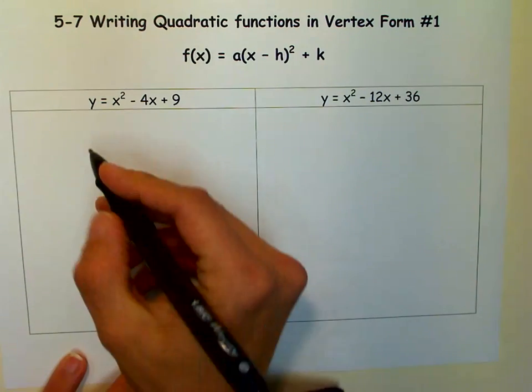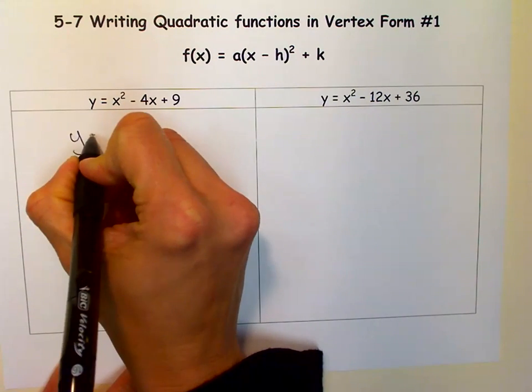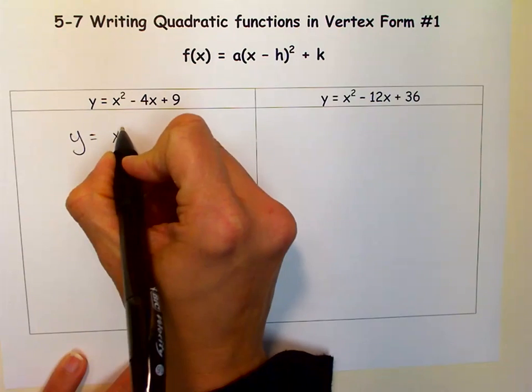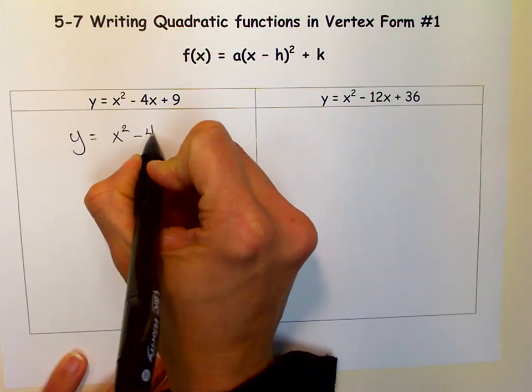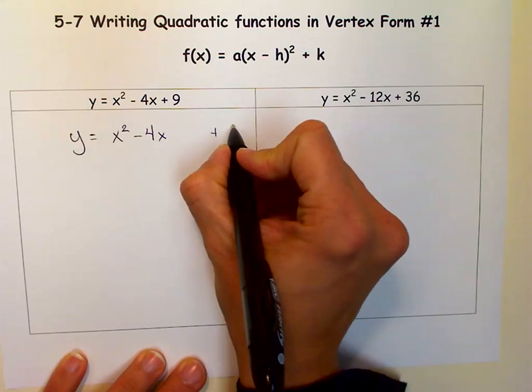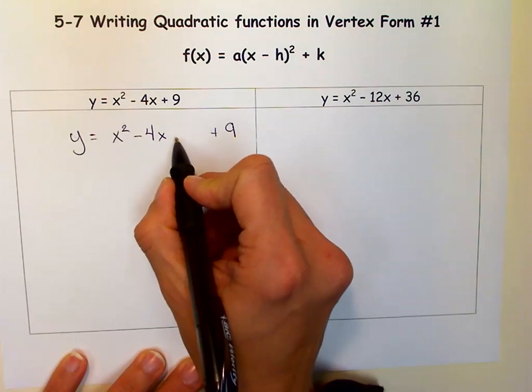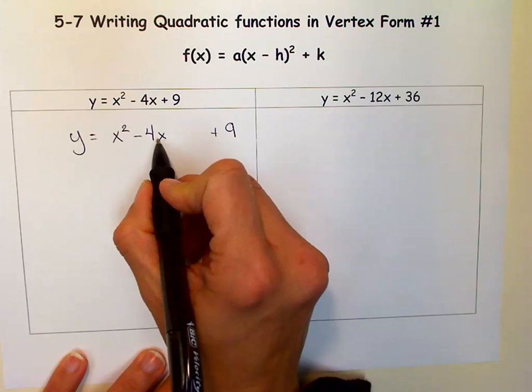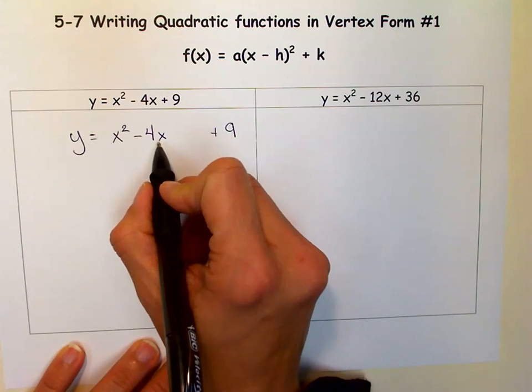So we do that by completing the square. Now it's a little bit different than how you learned when we were solving by completing the square. The difference is we don't take the constant and move it to the other side, we just kind of move it over a little bit to give us room to complete that perfect square, that trinomial square.